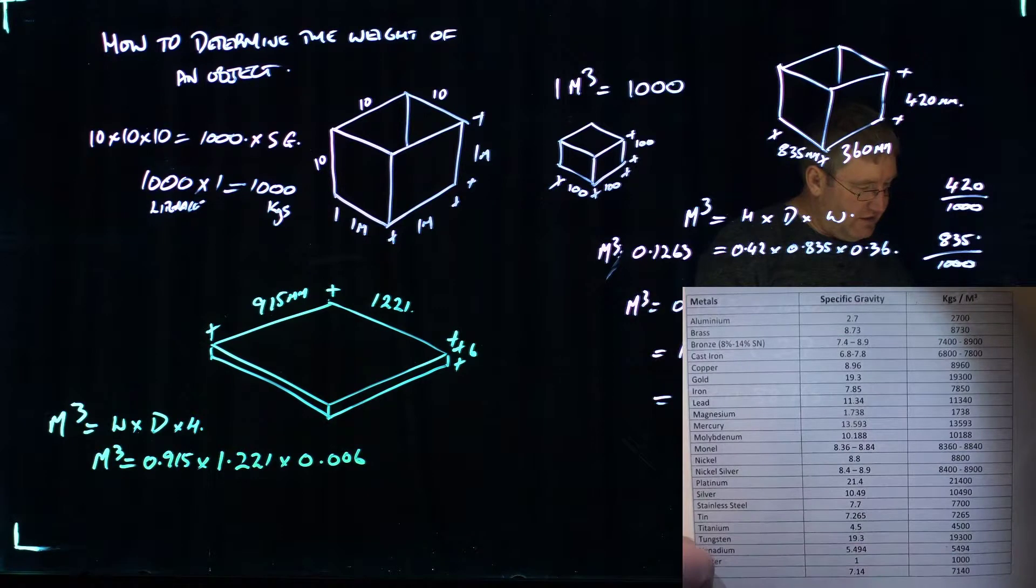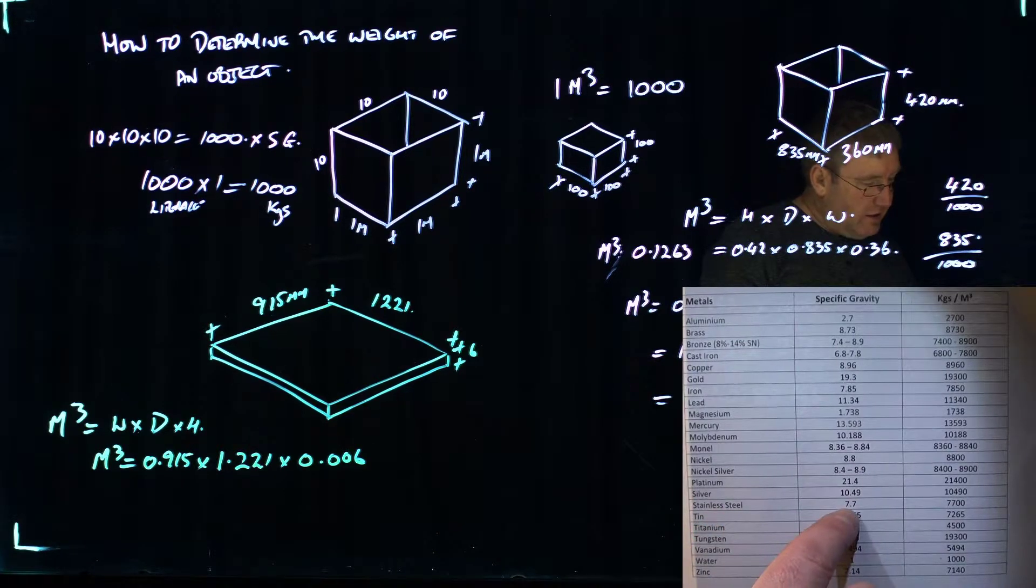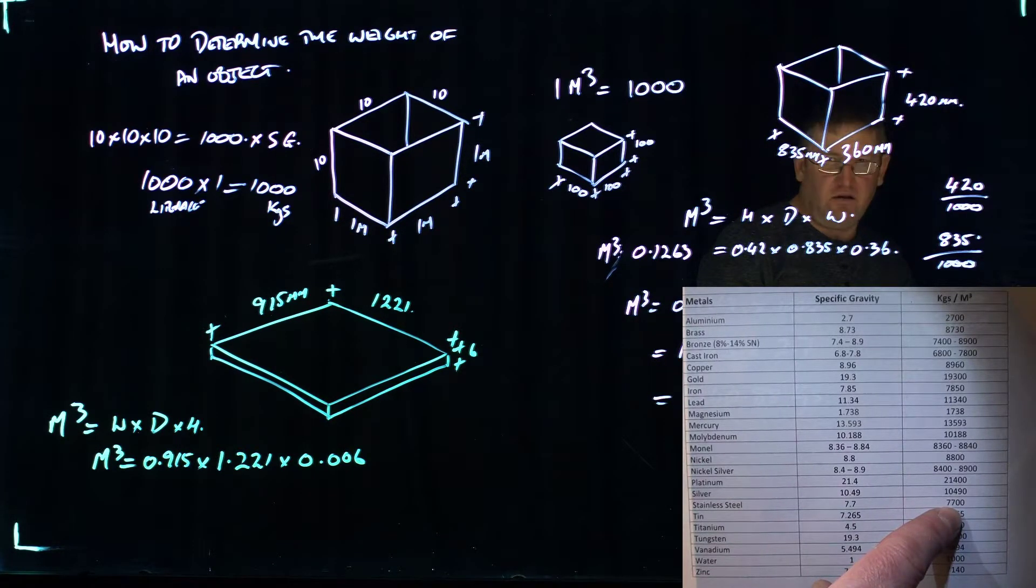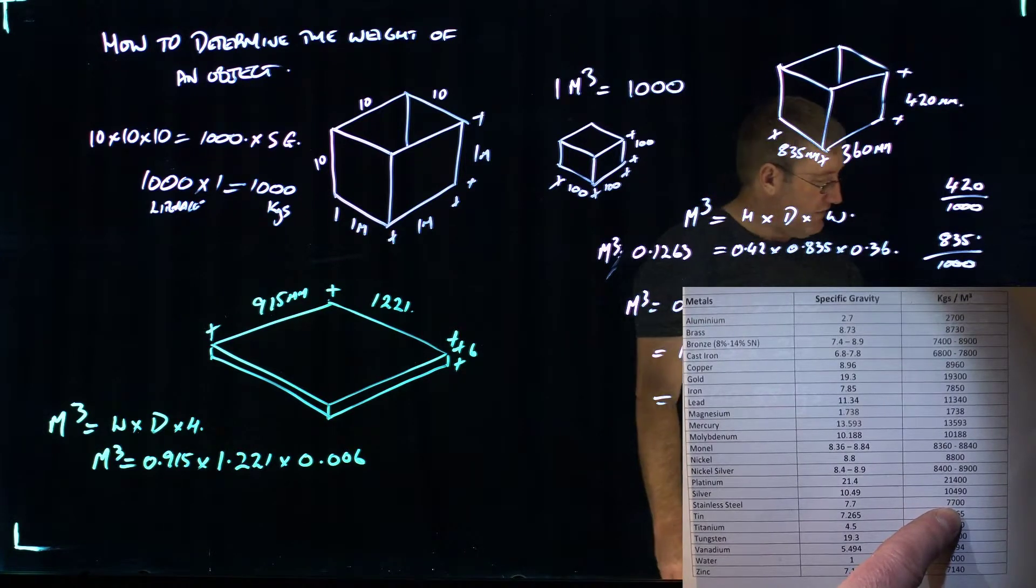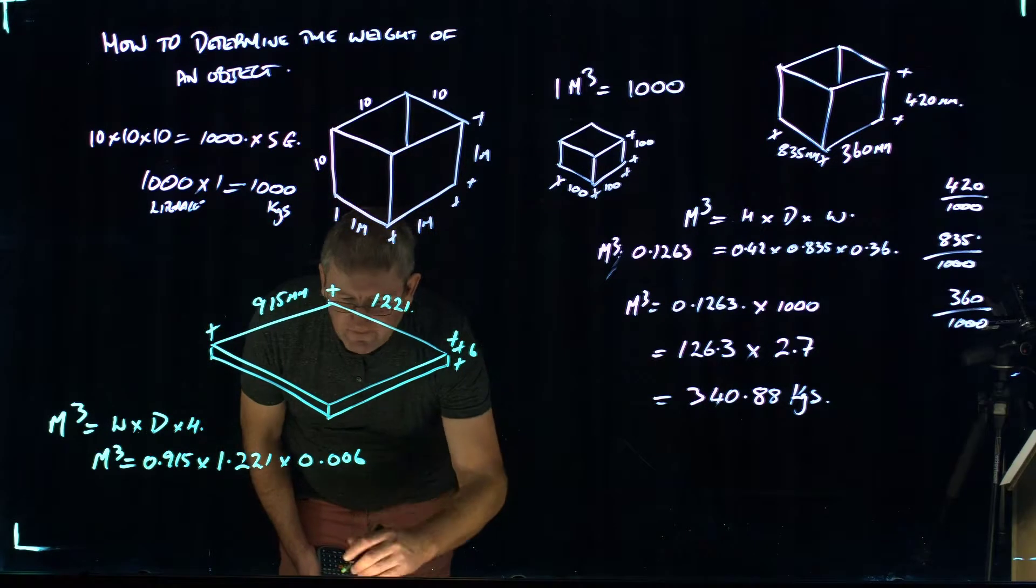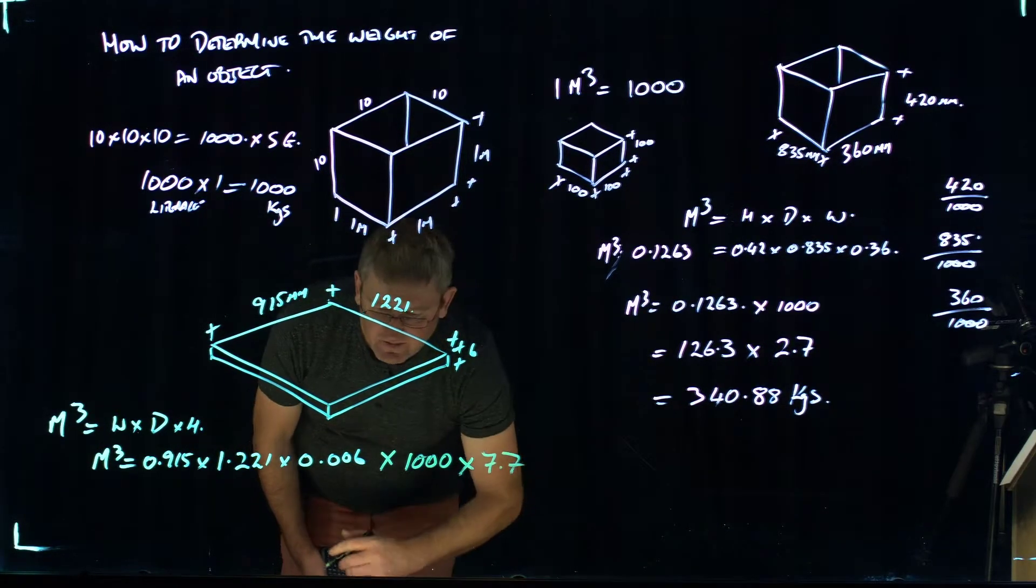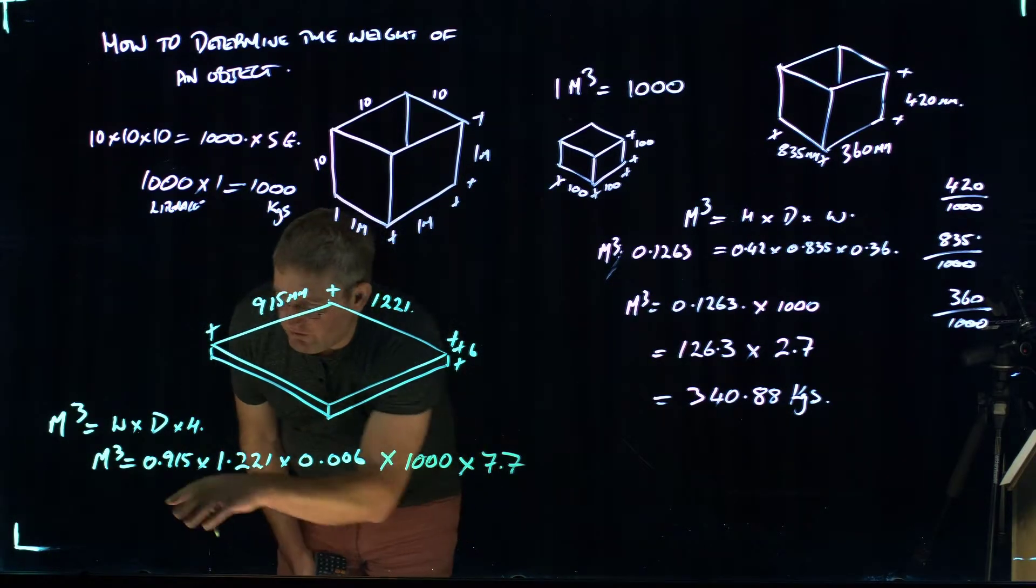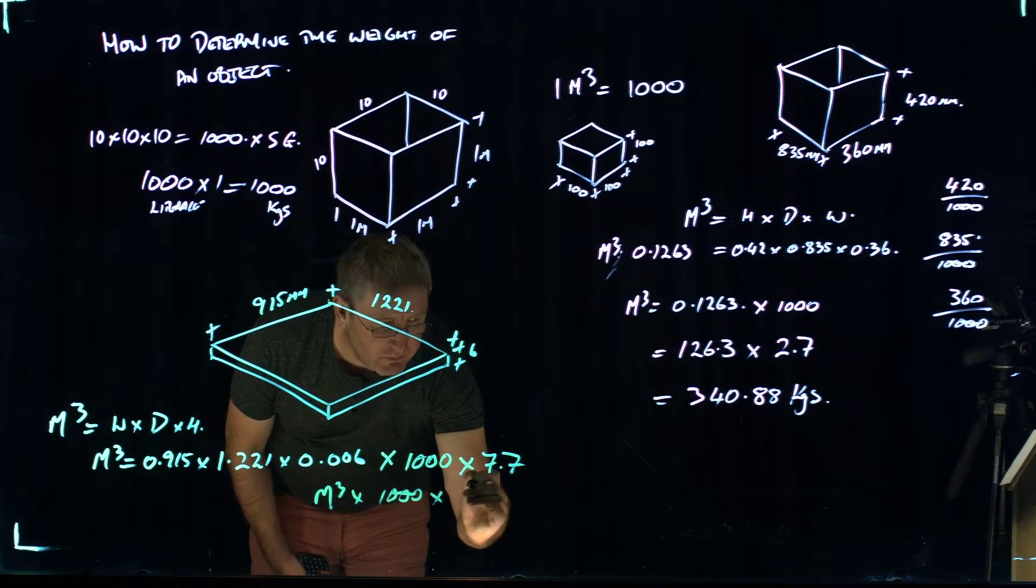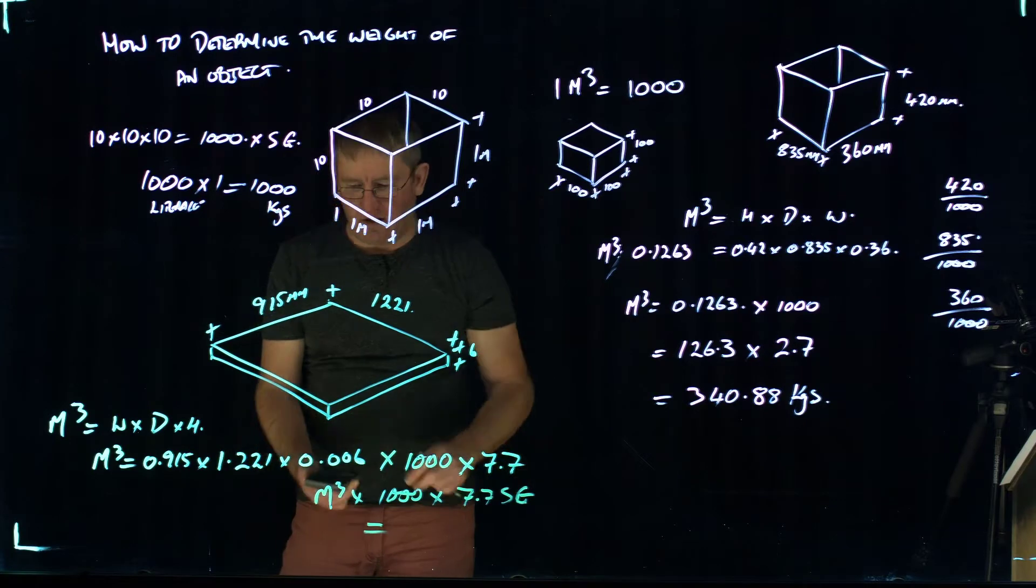And in this one, we're going to say that this sheet is stainless steel. Stainless steel has a relative or specific gravity of 7.7, which means on the right-hand side of the chart, a cubic meter of stainless steel would weigh 7,700 kilograms. So at that point, we work out the cubic meters. And we can then times that by 1,000, and then we times it by the specific gravity. So these three times by each other will give us meters cubed. We then times it by 1,000, and then we times it by 7.7, which is the specific gravity.